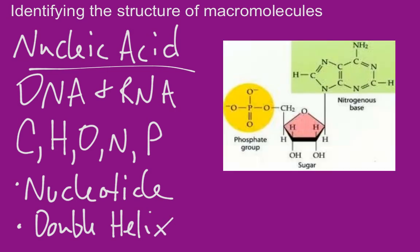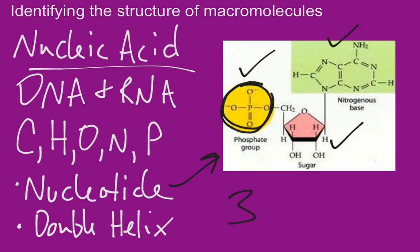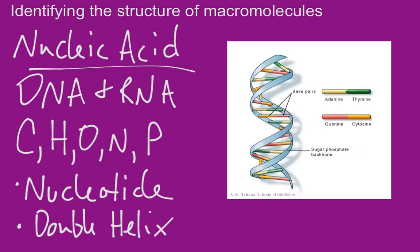The key element to look for when identifying nucleic acids is phosphorus, because we're going to have a phosphate group. This is a nucleotide — it has three parts: a phosphate group, a five-carbon sugar, and a nitrogenous base. If you see those three parts, and in particular that phosphate group, that tells you that you have a nucleic acid. This nucleotide is the monomer of nucleic acids.